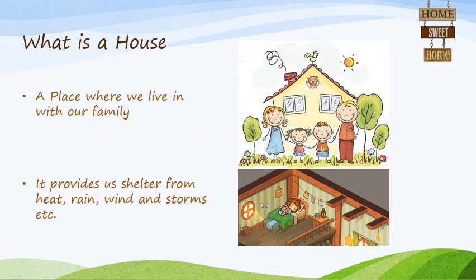Now, children, what is a house? A house is a place where we live together with our family, where we share space with them. It also provides us shelter from rain, heat, cold, wind and storm. So a house is a place where we live together with our family members and it protects us from all these things.